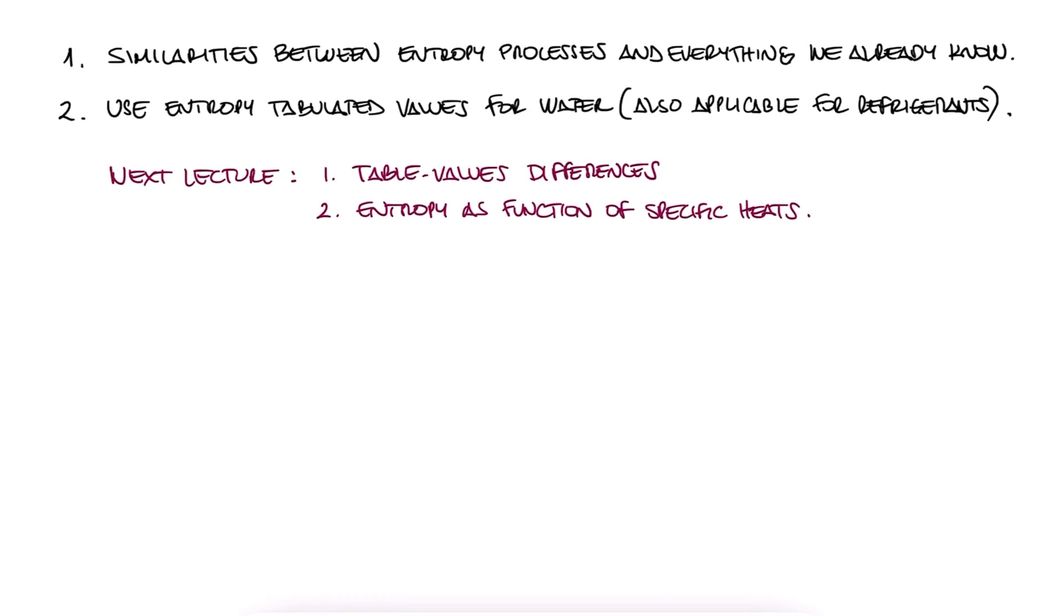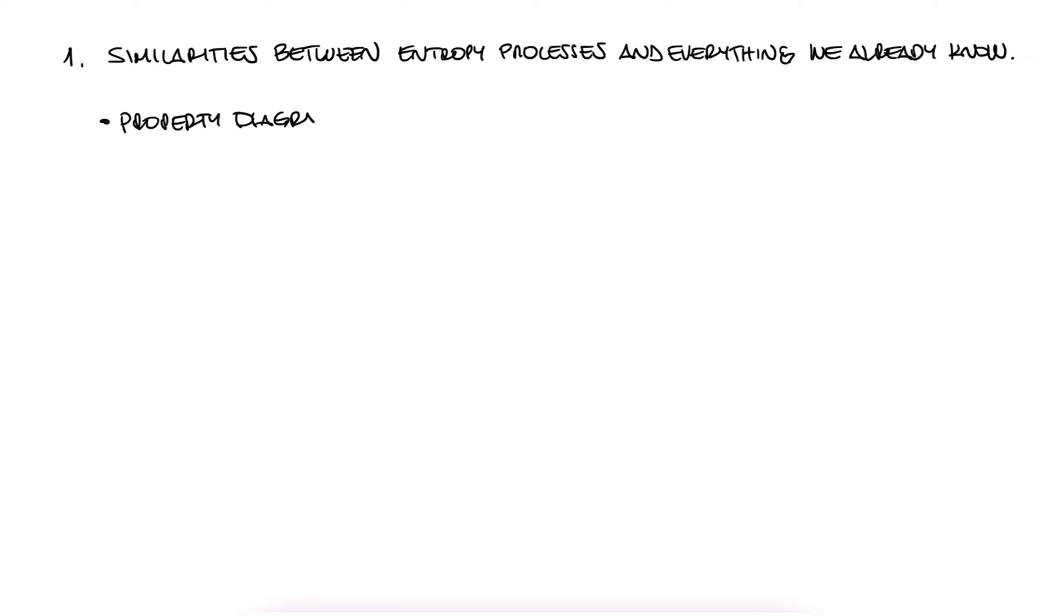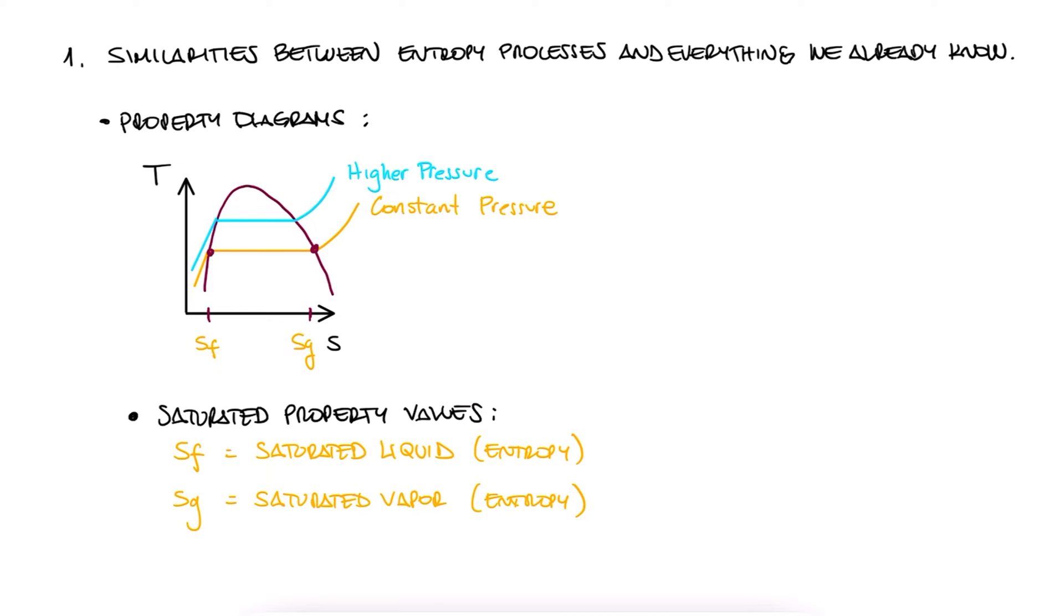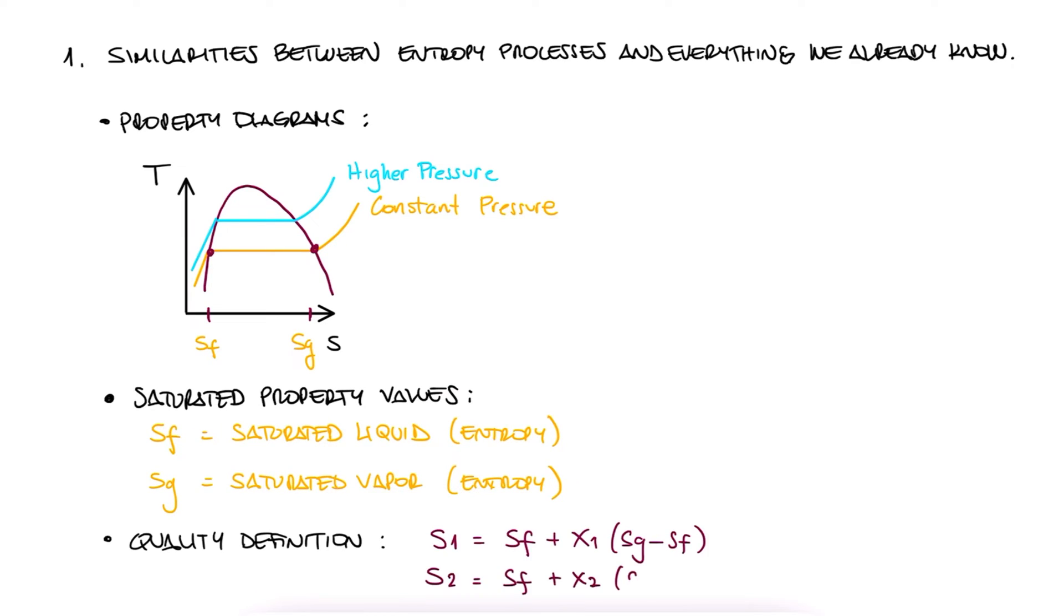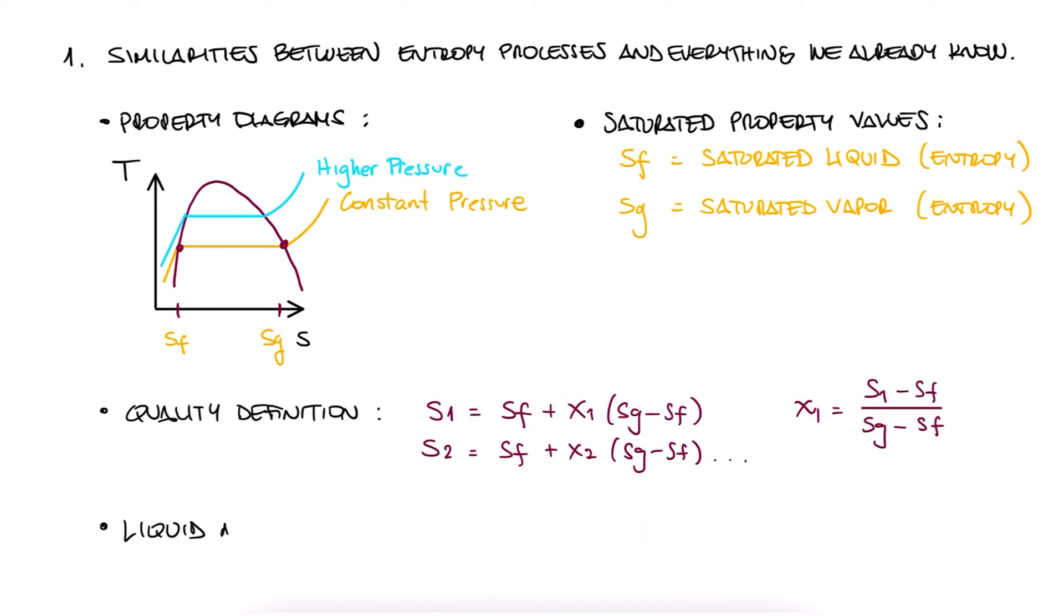We'll finish this lecture by first going over what has not changed between the previous properties that we've used so far. The main characteristic that hasn't changed much is the property diagrams we use. We'll be using TS diagrams more than TV diagrams, but they're very similar. We still have a dome and constant pressure lines look very much the same. And, if we increase pressure, we go up. We still have SF for saturated liquid, and SG for saturated vapor. And, we can still use the quality expressions with these. And, finally, we can still use liquid approximations.